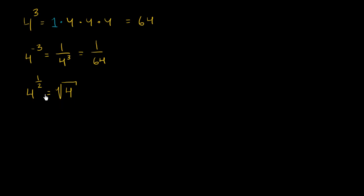We'll talk in the future about why this is. This is defined this way because it has all sorts of neat and elegant properties when you start manipulating the actual exponents. But what does the square root of 4 — especially the principal root — mean? Well, that means: what is a number that if I were to multiply it by itself, or have two of those numbers multiplied together, I'm going to get 4?